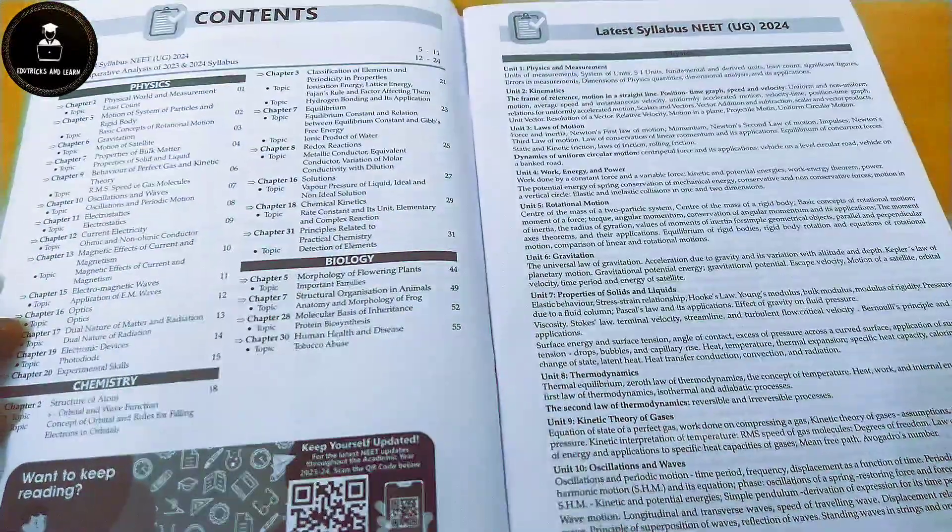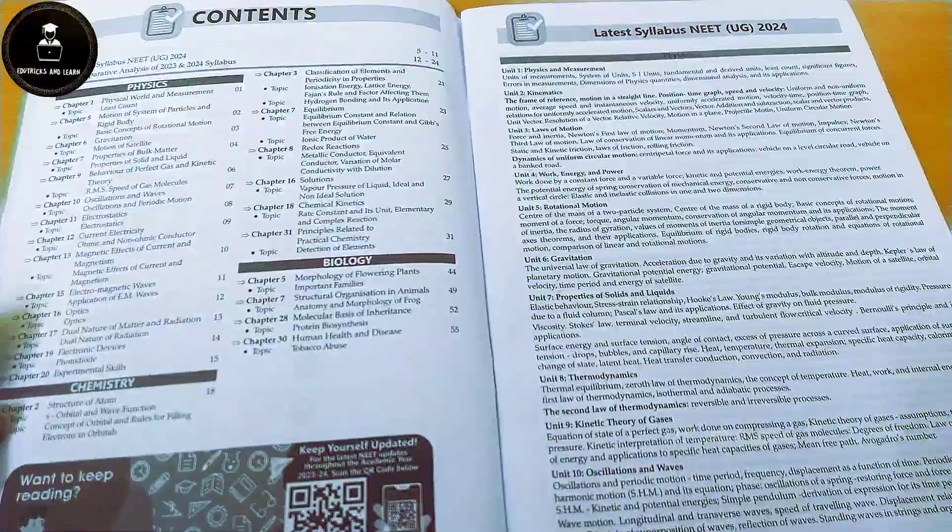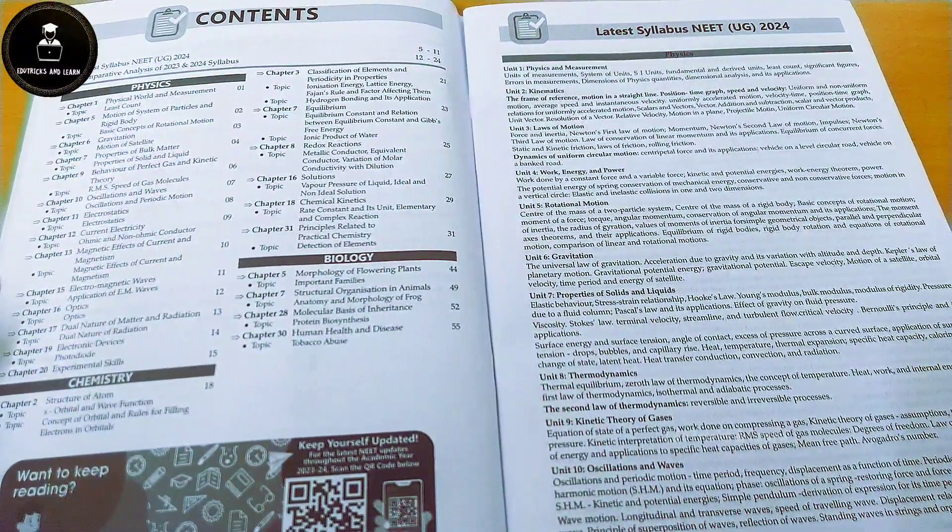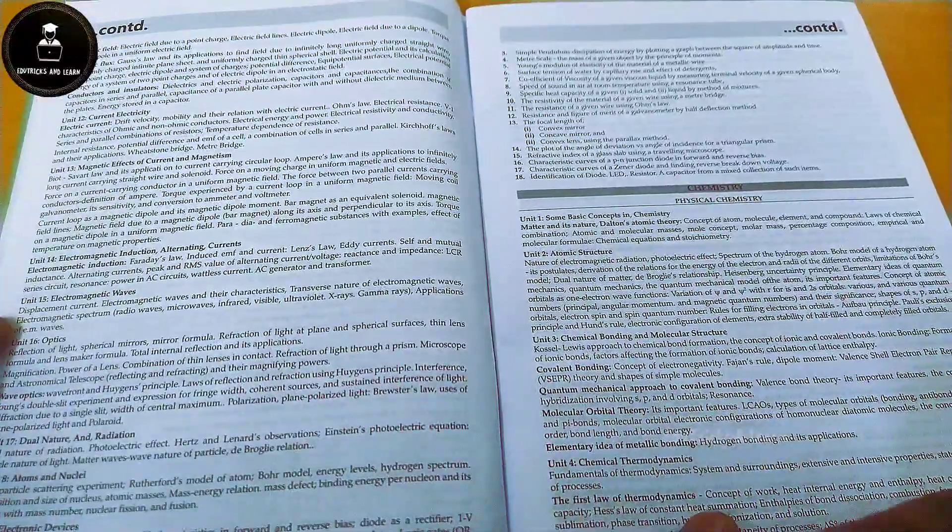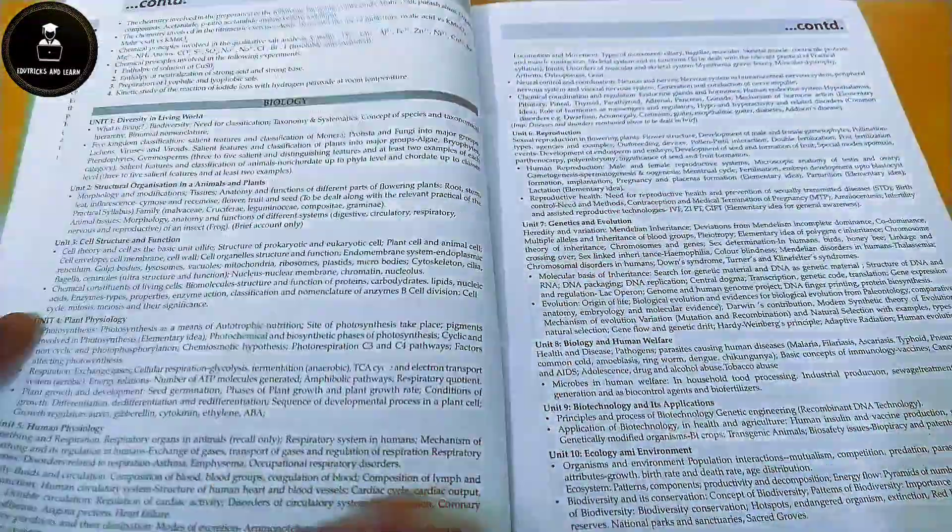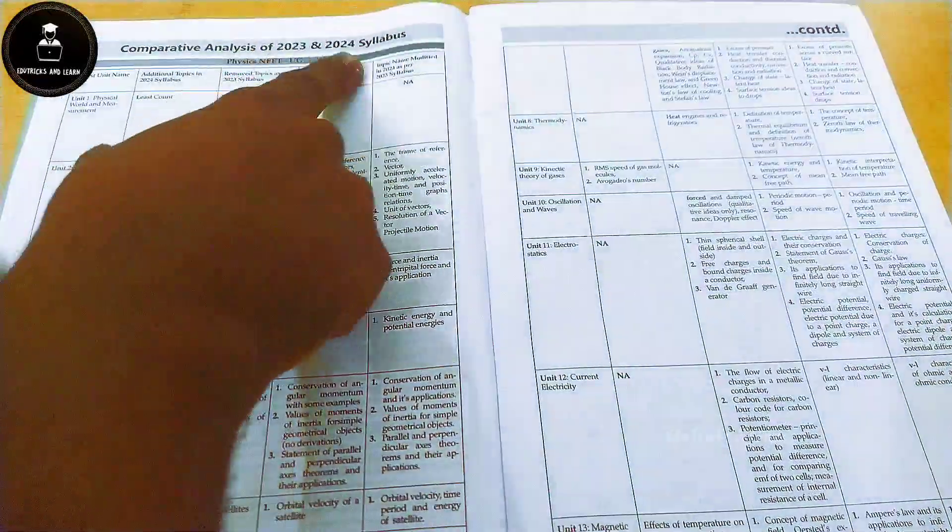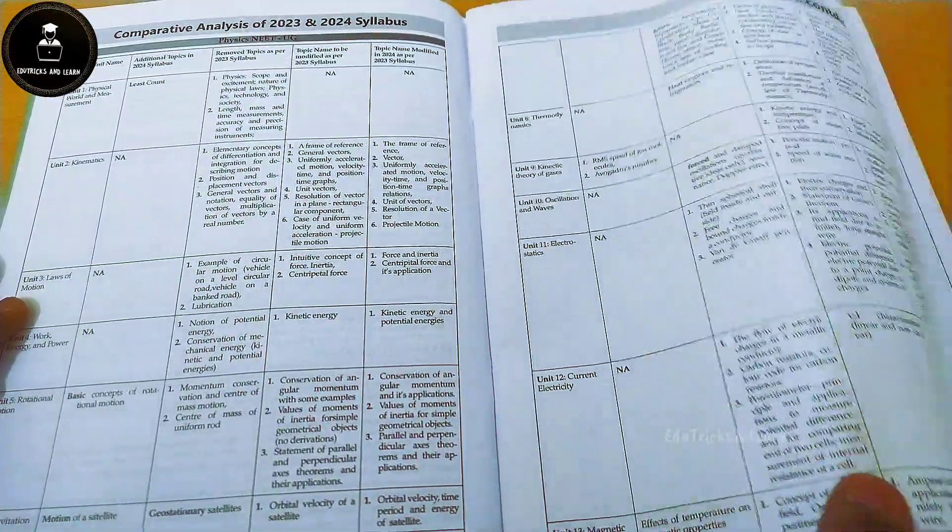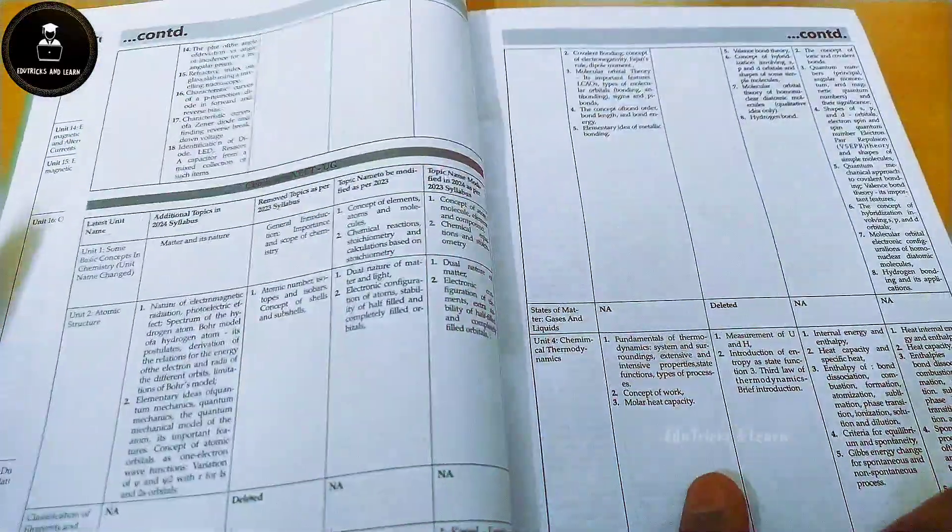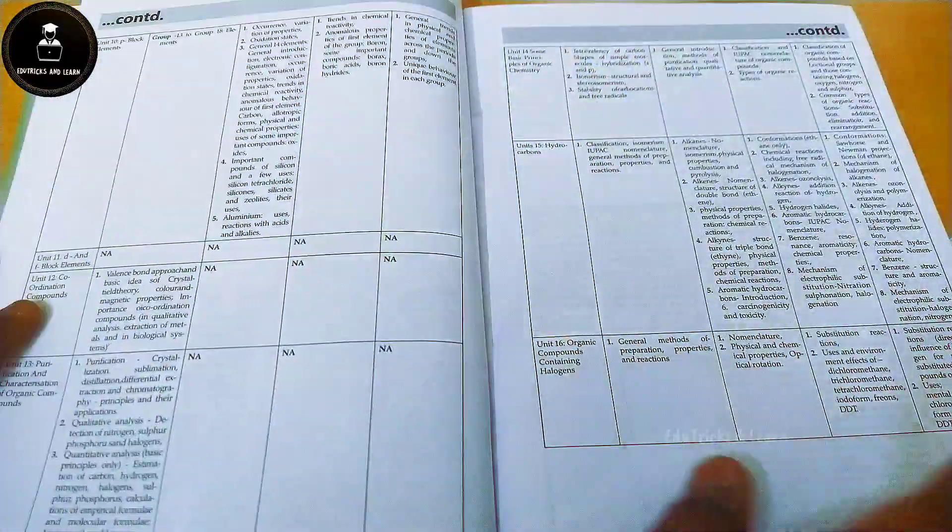Starting off, they have given the complete new syllabus, the latest new syllabus for NEET 2024 for physics, chemistry, and biology. After the latest syllabus of 2023 and 2024, they have given the comparative differentiation analysis between the 2023 syllabus and 2024 syllabus, what all has changed, what is removed, and what is added extra.